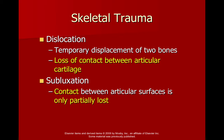Now we're moving on to a new idea: dislocation versus subluxation. A subluxation — you may have heard that word if you've ever been to a chiropractor. A dislocation is a total loss of contact between the two joining articular cartilage surfaces. A subluxation is only partially lost contact versus total loss.